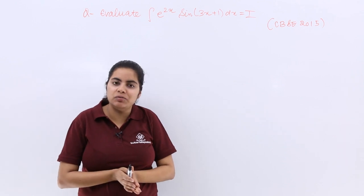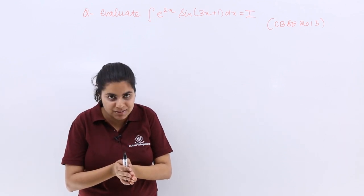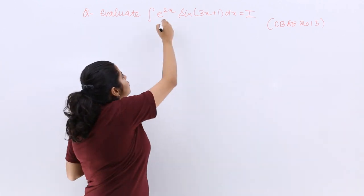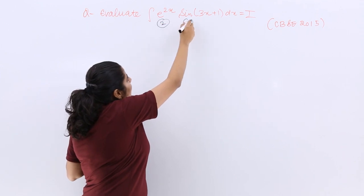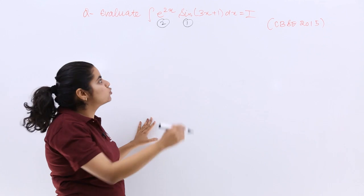Such a question can be done directly by integration by parts because here it is one exponential, one trigonometric. The exponential function would be the second function with respect to ILATE and the first would be the sine function. Let's start with the solution.